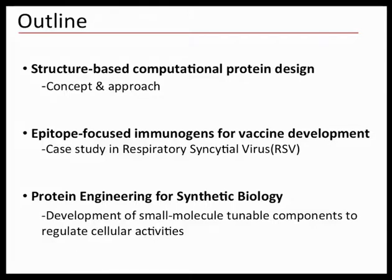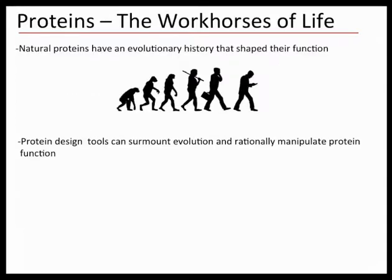I'll tell you about one of the main applications of the lab, which comes from a lot of the work I've done in the past — trying to design computationally what we call epitope-focused immunogens for vaccine development. And then to finish up, I'll tell you about a new branch of research we have in the lab, more related to designing proteins that can be used to control cellular activities. So when you think about proteins, most of us think about them as single entities — they are what they are, and we just do what we can with them.